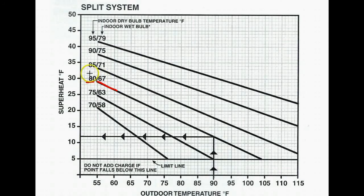Now if you read somewhere between 80 and 85 degrees, you're going to have to draw an imaginary line down the chart to get your proper superheat. But in this instance, we'll make it easy: 80 degrees indoor temperature, 90 degrees outdoor temperature.